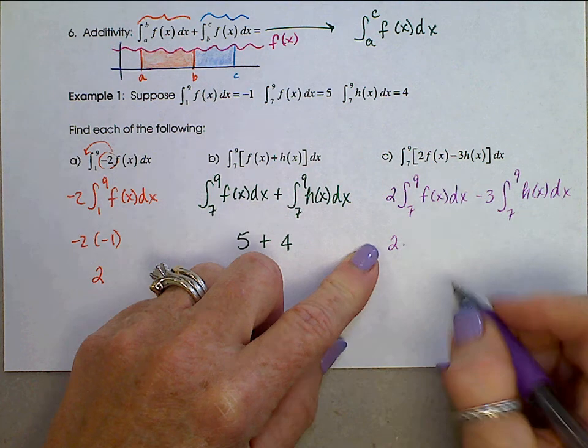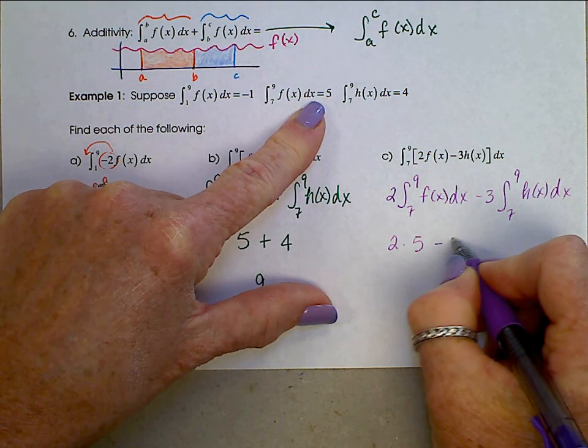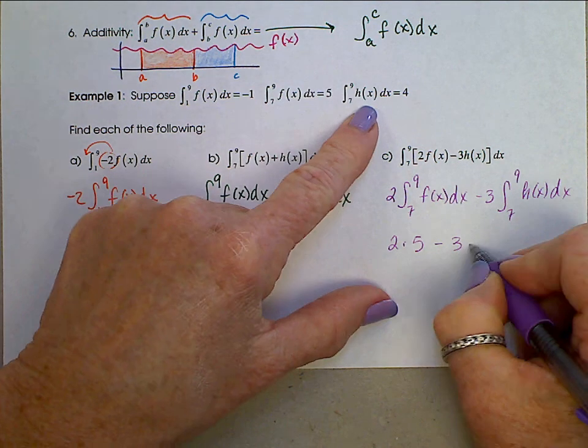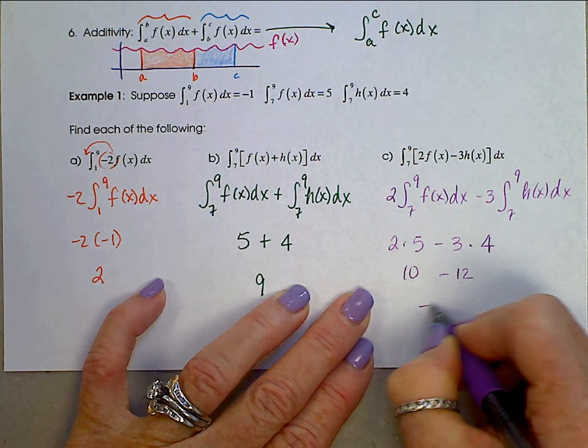2 times the integral from 7 to 9 of f is 5 minus 3 times the integral from 7 to 9 of h, 4. We have 10 minus 12, which is negative 2.